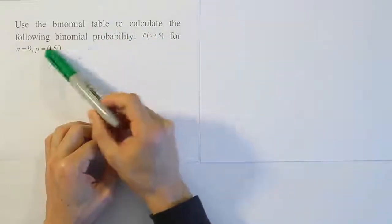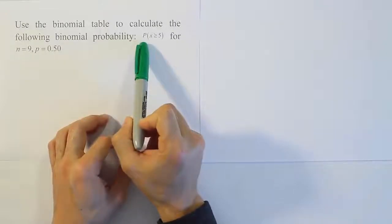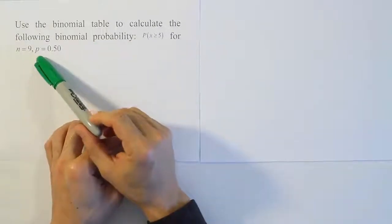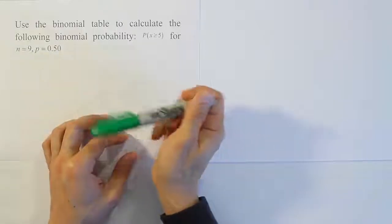Use the binomial table to calculate the following binomial probability: the probability that x is greater than or equal to 5 for n equals 9 and the probability of success is 0.50.